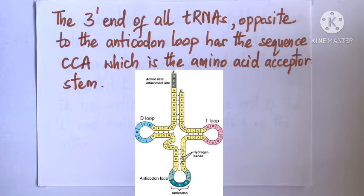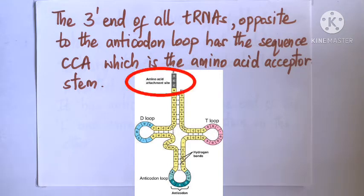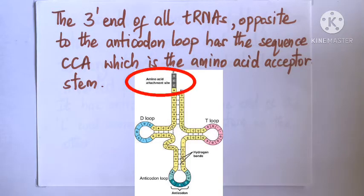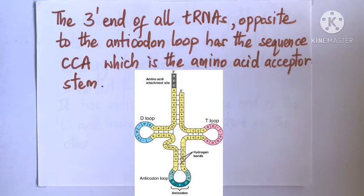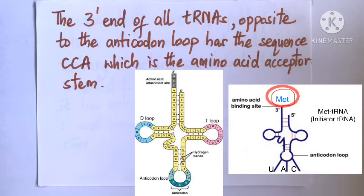Where is the amino acid binding site? At the opposite end of the anticodon loop lies the amino acid acceptor stem, or the 3' end of the tRNA. The 3' end of all tRNAs ends with the CCA sequence, and it is the 3' hydroxyl group of the last adenine nucleotide that attaches to the amino acid. The process of adding an amino acid to the 3' end of a tRNA is called charging of tRNA, or technically, aminoacylation.